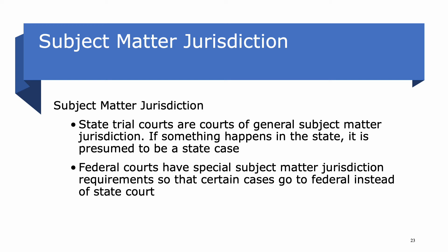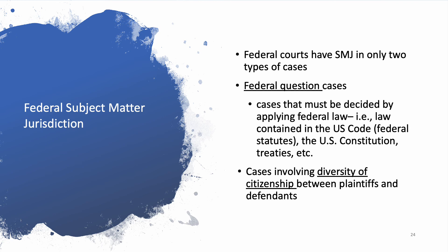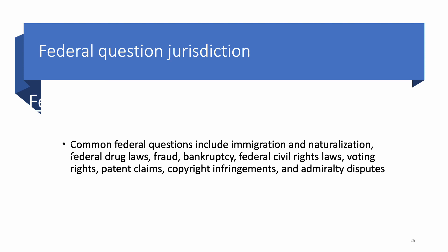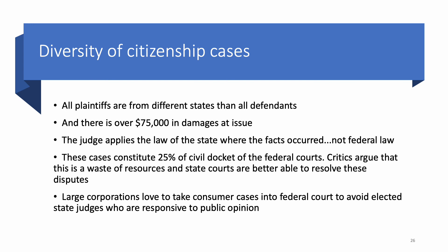On subject matter jurisdiction: normally if something happens in a state, it's presumed to be a state case. But the federal government has two kinds. One is cases that must be decided by the application of federal law — the U.S. Code, the U.S. Constitution, treaties, etc. Common federal question cases include immigration and naturalization, federal drug laws, fraud, bankruptcy, federal civil rights laws, voting rights, patent claims, copyright infringement, and shipping matters.